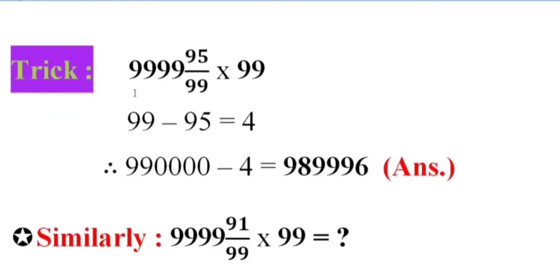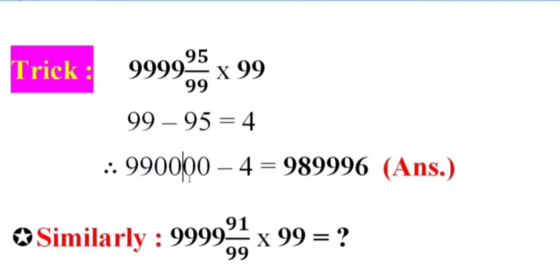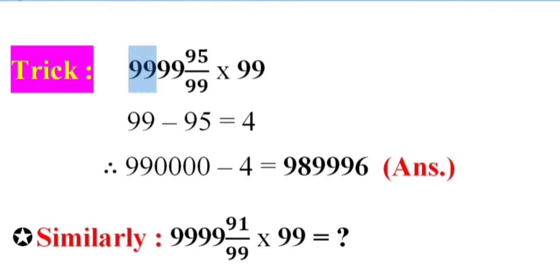Trick: 4-digit 9 and 95 by 99 into 99. Step 1: 99 minus 95 equals 4. Therefore, 99 minus 4 equals double 9, and 4-digit 0 means this 4-digit 9. Answer: 98, triple 9, 6.